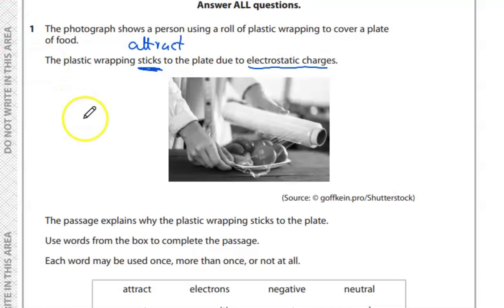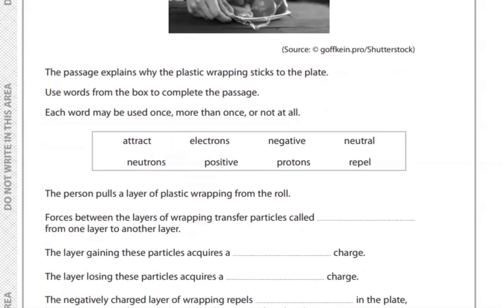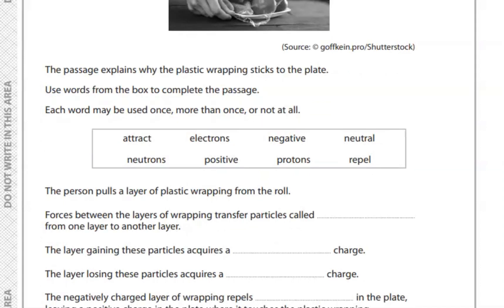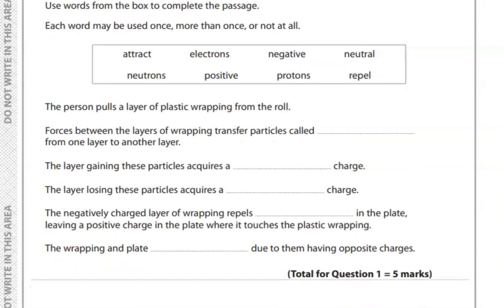The passage explains why the plastic wrapping sticks to the plate. Remember: the plastic wrapping sticks to the plate due to electrostatic charges, meaning there is an attractive force here. This information will help us in solving the blanks. The person pulls a layer of plastic wrapping from the roll — forces between the layer of wrapping transfer particles called...